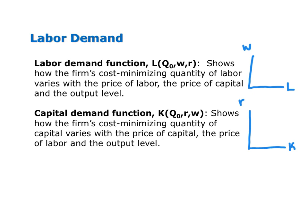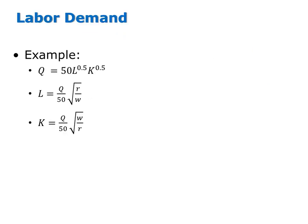I'll show you an example next. Consider the following Cobb-Douglas production function: Q equals 50 times L to the 0.5 times K to the 0.5. To see where the labor and capital demand functions come from, remember that each tells us the cost minimizing amount of an input. So we want to start with the first step from cost minimization: when a firm is minimizing cost, the slope of its isoquant, called the MRTS, equals the slope of its isocost, called the MRT.